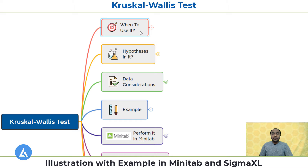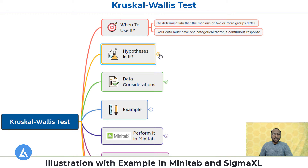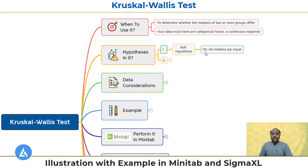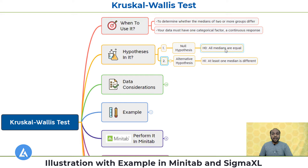The first important thing we must know is the application of the Kruskal-Wallis test — that means when to use it. The Kruskal-Wallis test is used to determine whether the medians of two or more groups are different, and your data must have one categorical factor and a continuous response. Similar to all hypothesis tests, this non-parametric test also has two hypotheses: H0: all medians are equal, and H1: at least one median is different. This resembles ANOVA, but here we compare medians instead of means.